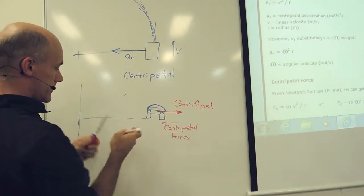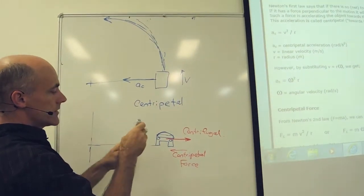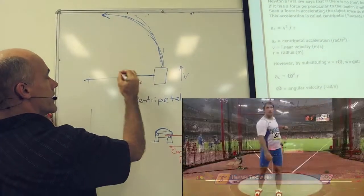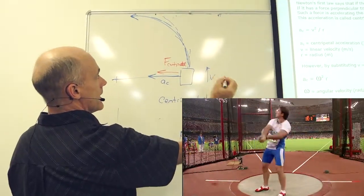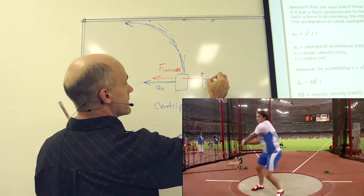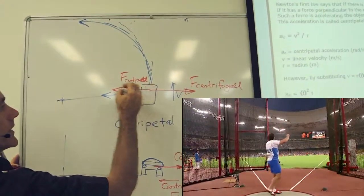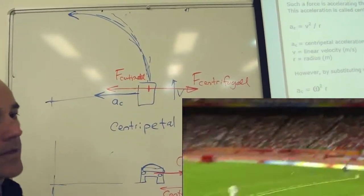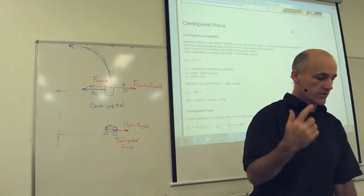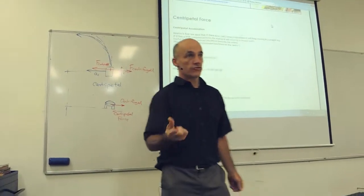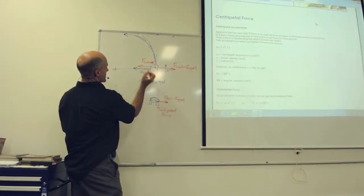So if we went back to the weight on a string, for example, if that was a weight on a string and rotating around, we have the string is applying a centripetal force, and the weight is applying a centrifugal force, and they're equal and opposite. So it's really the same force, it's just which body are you looking at? What does the string do to the mass? Centripetal force. What does the mass do to the string? Centripetal force.